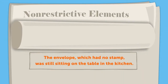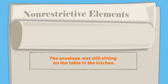This sentence contains a non-restrictive element: "The envelope, which had no stamp, was still sitting on the table in the kitchen." The clause "which had no stamp" is a non-restrictive element. Notice that the sentence contains commas. The clause can be removed and the reader will still know the location of the envelope in the house. The reader does not need to know that the envelope did not have a stamp because that information is not necessary to the meaning of the sentence.